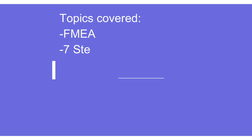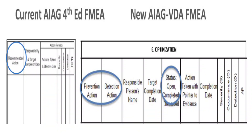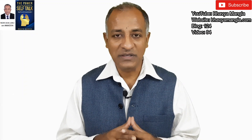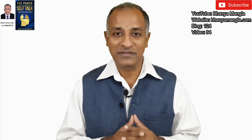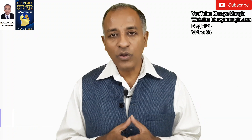In summary, I covered the seven key steps of the FMEA process, the failure chain, severity, occurrence and detection rating, preventive and detection actions, action priority, and the key differences between recommended action as per FMEA fourth edition and optimization as per FMEA first edition. My next video will be about structural analysis, which is step two of the FMEA series.